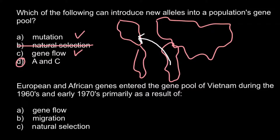How did European and African genes end up in Vietnam in the 1960s and 1970s? There was the Vietnam War. American soldiers were descendants of Europeans and Africans, so they had European and African alleles in their gene pool. When they met local women, they left behind their alleles in the form of their children. The Vietnamese gene pool was affected to a certain level and changed. Is this natural selection? Of course not.